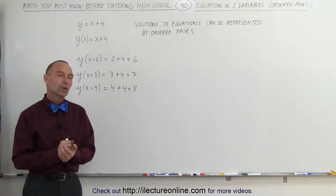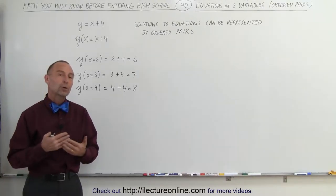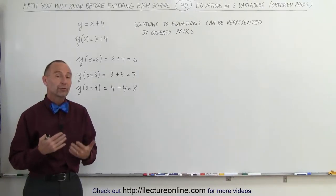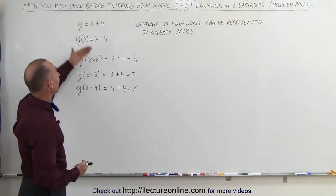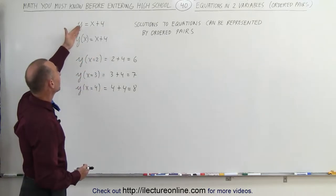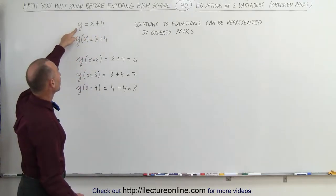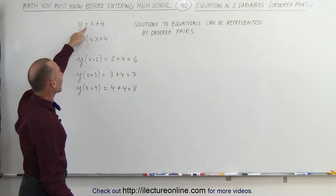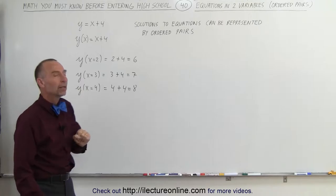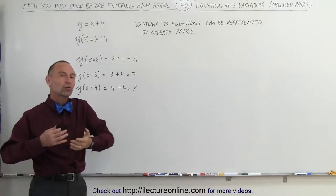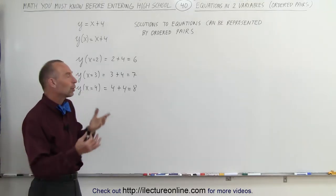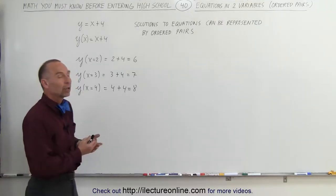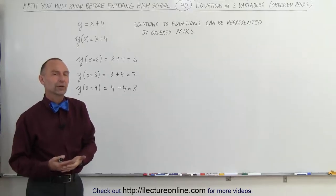Welcome to ElectronLine. Whenever we have equations of two variables — here's the example again: y equals x plus 4, y being the dependent variable, x being the independent variable, or writing it where y is a function of x, which is equal to x plus 4 — whenever we want to represent the solution to an equation like that, we can do so with ordered pairs.